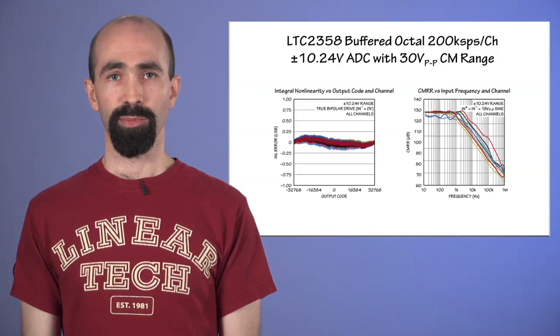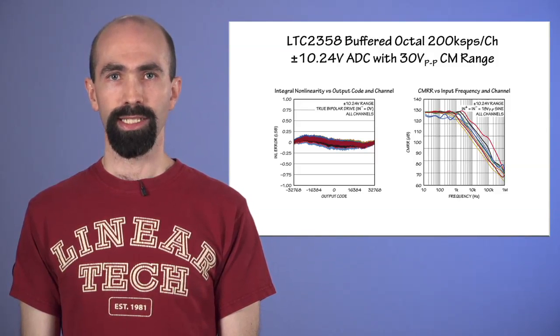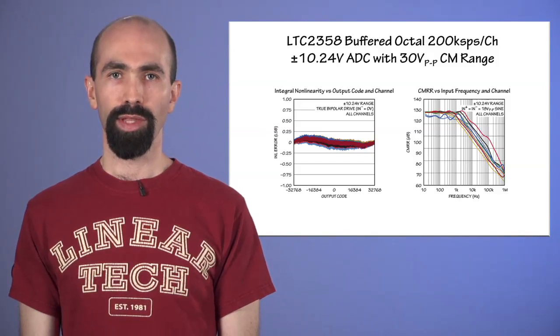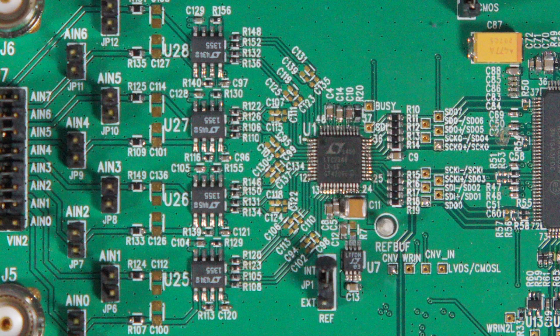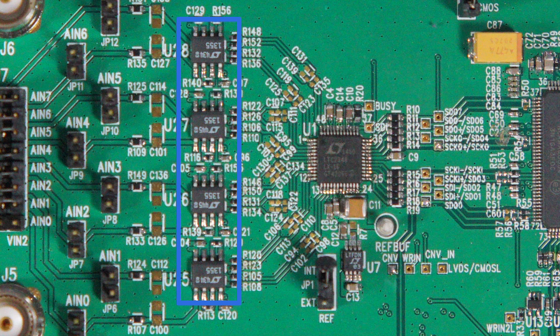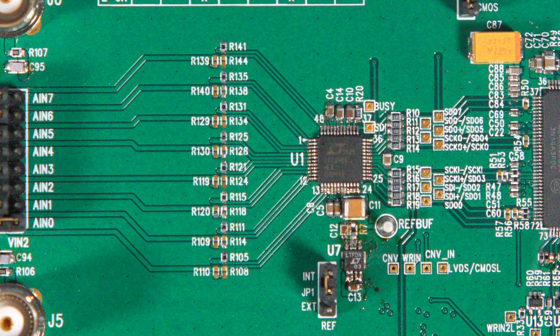Many sensors, even those with outputs that are slow or delicate, can simply be connected directly to the LTC-2358 without any intermediate signal conditioning. Where previously, an octal ADC might have required buffering from four dual high-voltage op amps like this, the LTC-2358 offers a dramatic savings in board area and power by eliminating those op amps.